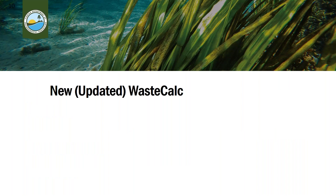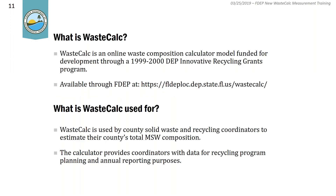At this point, I'll hand it over to Carson. She's going to review the tool, provide information on why it's different from the previous version and how to use it. Waste Calc is an online-based waste composition calculator developed in the 2000s, available on DEP's website. It's used by county solid waste and recycling coordinators to determine a county's total MSW composition. The results from Waste Calc are used for program planning and, more specifically, annual reporting purposes.